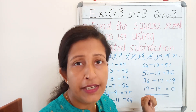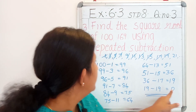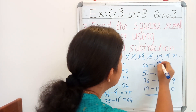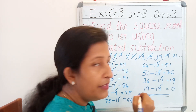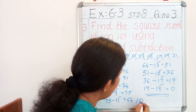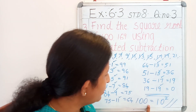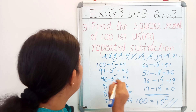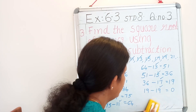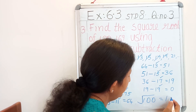Now we are going to find out how many odd natural numbers we used to get 0: 1, 2, 3, 4, 5, 6, 7, 8, 9, 10. We used 10 odd natural numbers. That means 100 can be written as 10 squared. That is, the square root of 100 is equal to 10.